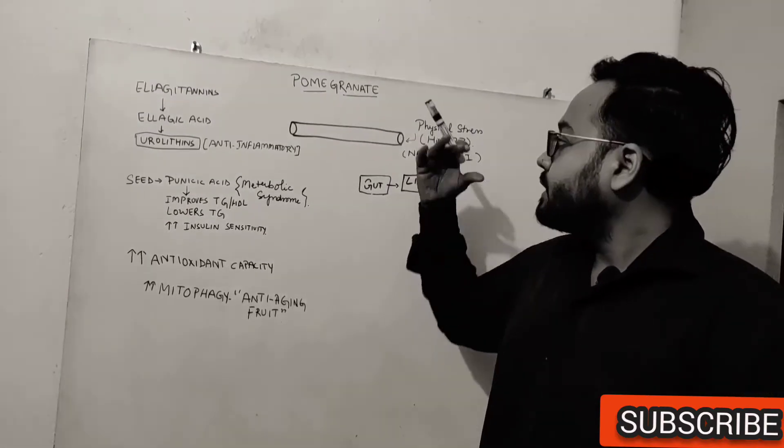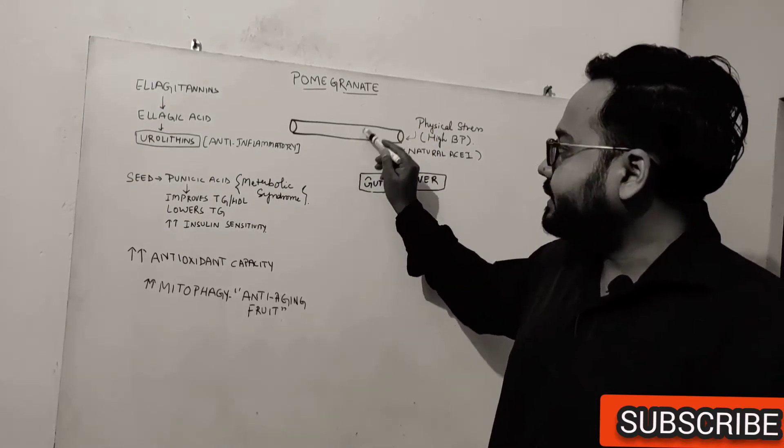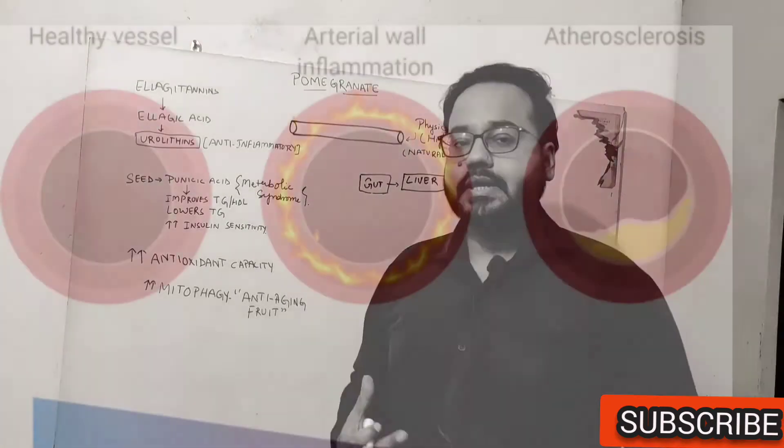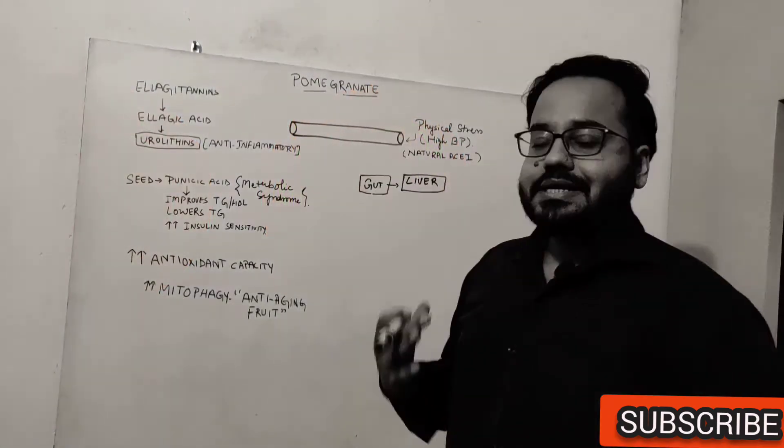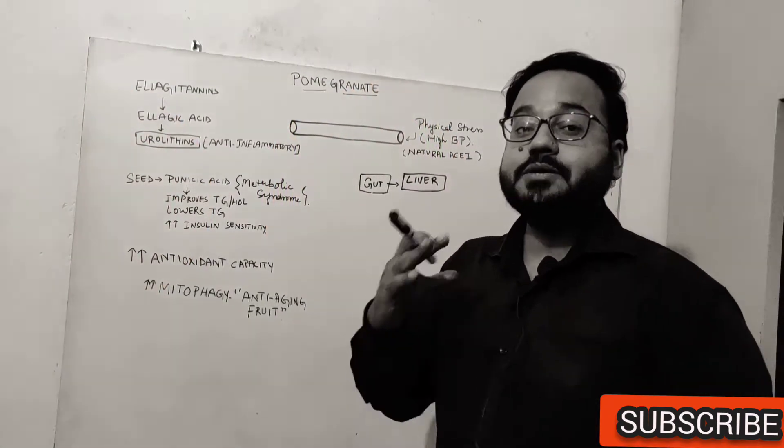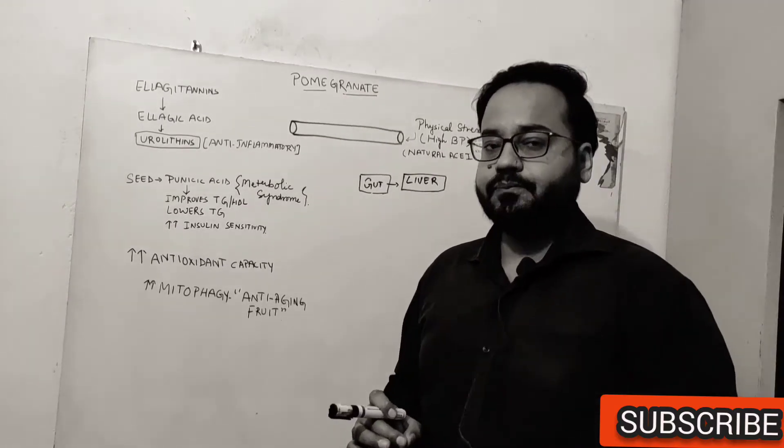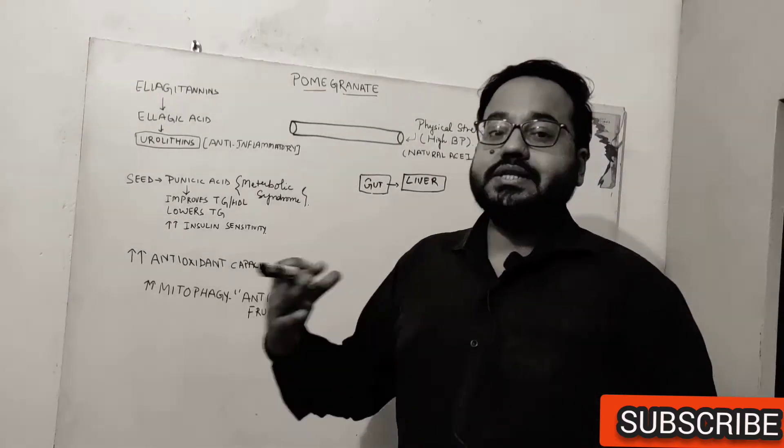So it's going to significantly shrink the size of your atherosclerotic lesion. Pomegranate is also going to decrease the reactive oxygen species because it prevents lipid peroxidation, and pomegranate is also going to prevent LDL oxidation.